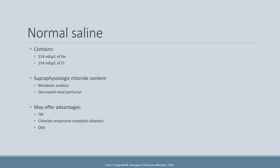Hyperchloremia alone is implicated in renal injury. Chloride can reduce renal blood flow, cause renal vasoconstriction, and reduce the glomerular filtration rate, or GFR. There may be other mechanisms contributing to acute kidney injury in ICU patients, but the primary literature we'll be reviewing does suggest that the use of chloride-rich fluids may lead to worse renal outcomes.